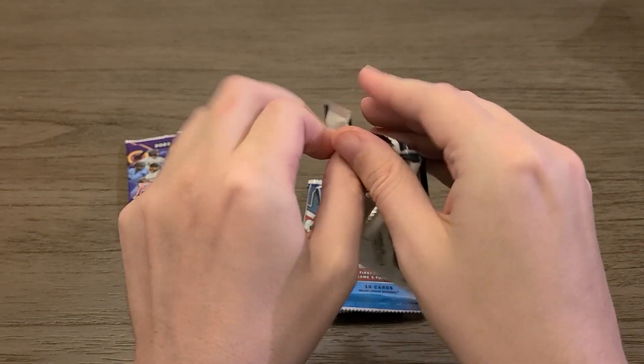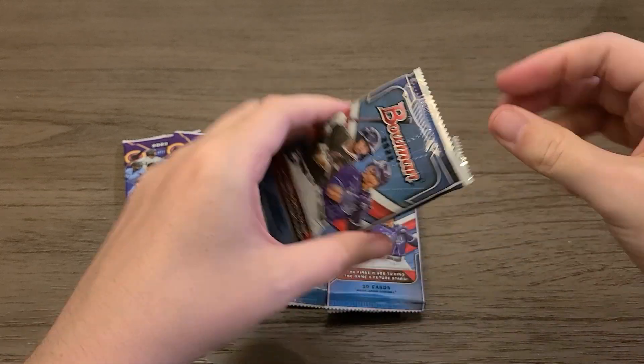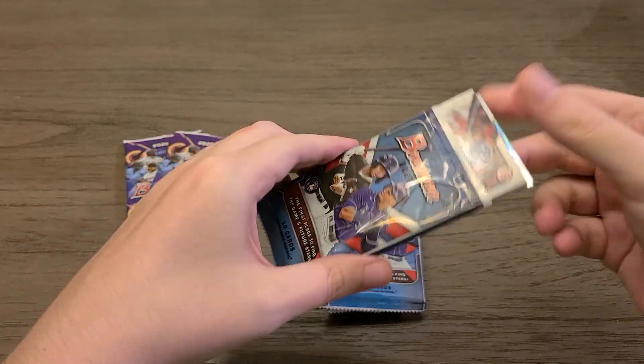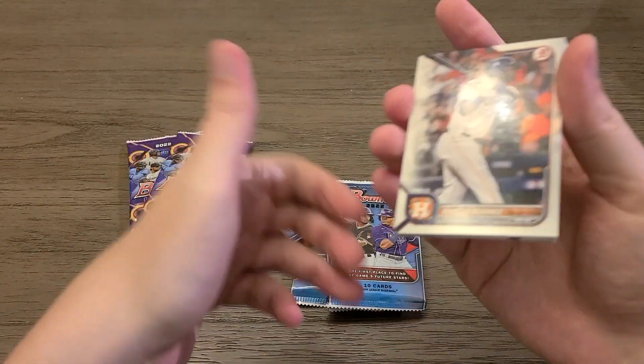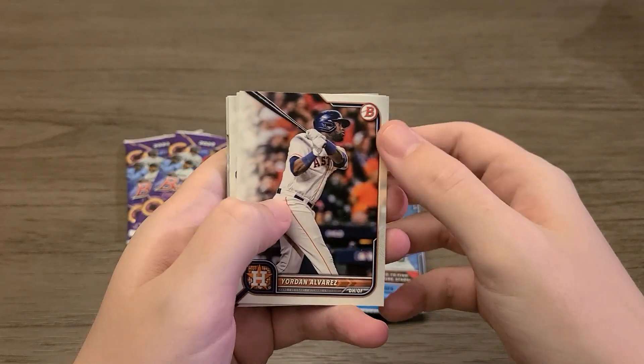We're always hunting for some Elly de la Cruz. In the base packs I believe he can show up but his color and autographs are in the mojo packs. So it's going to be a bunch of base followed by a couple chrome cards.